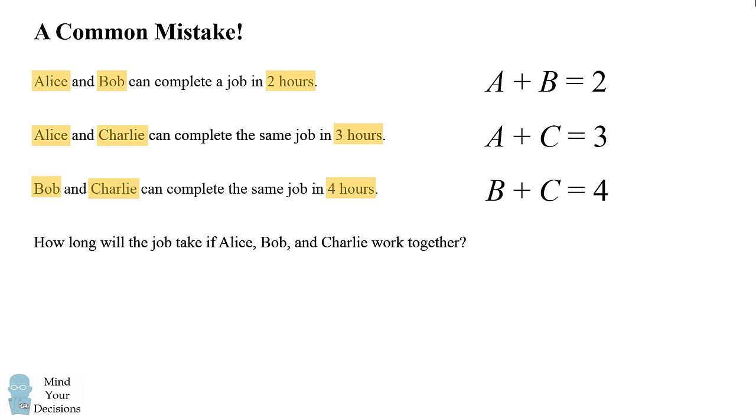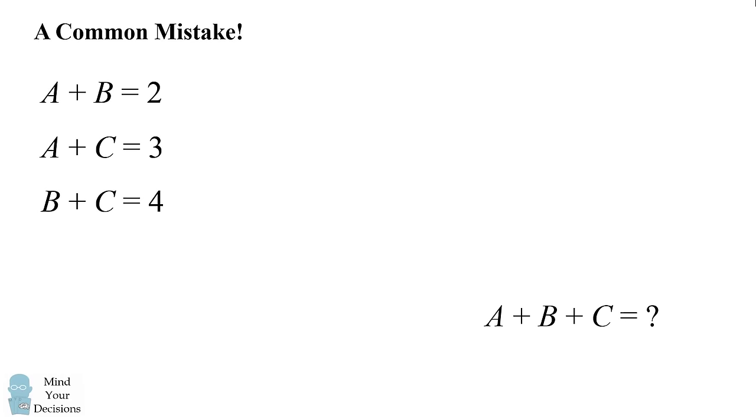The question of how long it will take for all three of them working together gets translated into the question of what is A plus B plus C. So to solve this system of equations, they want to solve for A plus B plus C. So they can add up all the equations together.